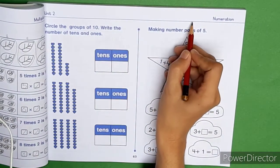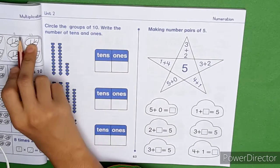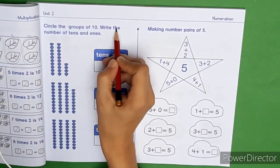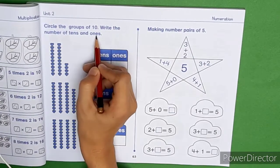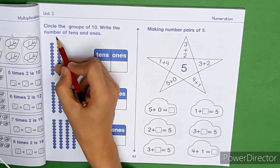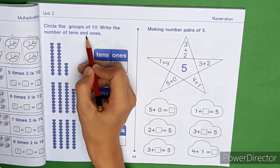First of all, student, you must write down the date here. Now, read the caption after me. Circle the groups of 10, write the number of 10s and 1s. Circle the groups of 10s, write the numbers of 10s and 1s.